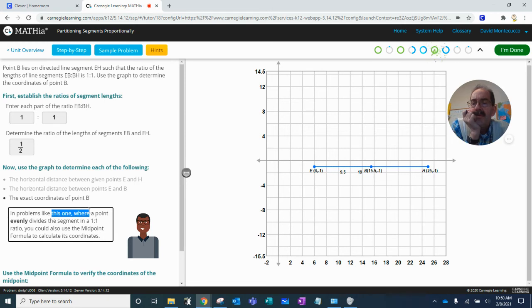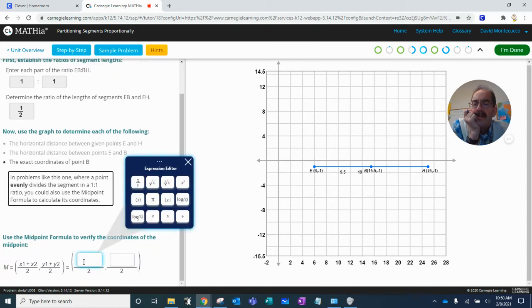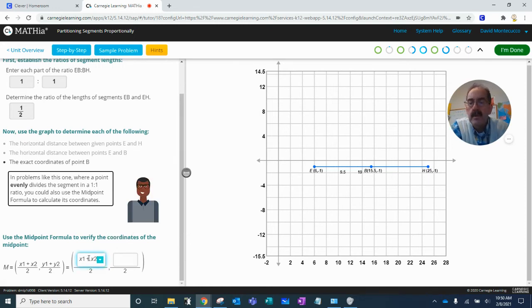And probably like this one, where the point is evenly described, you can also use the midpoint formula to calculate the distances. So the midpoint formula, X1 plus X2, submit. 6 plus 25 is negative 1 plus negative 1.